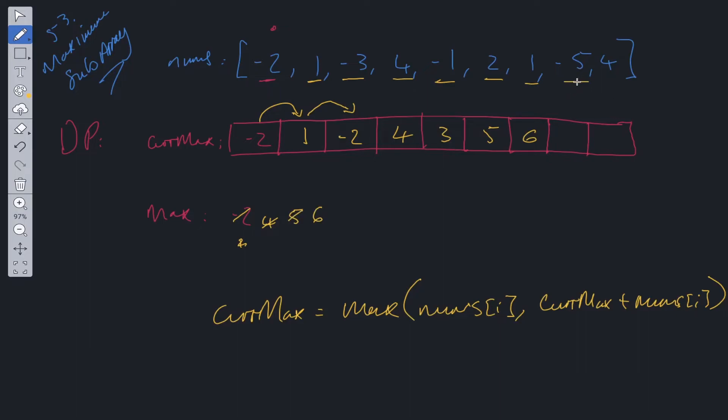At this point, we have minus 5 or minus 5 plus 6. So that's going to be 1. And at this point, we have a maximum between 4 or 4 plus 1. So that's going to be 5. So the maximum didn't update on the last 2. And then we can just return this value, which is what we're looking for.